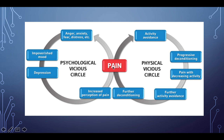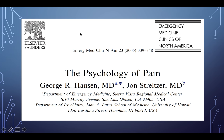These are the vicious circles of pain — both physical and psychological. On the physical side, a patient experiences pain, avoids activity, undergoes progressive deconditioning, and then experiences increased pain with any activity, leading to further avoidance. On the psychological side, pain leads to anger, anxiety, fear, or distress, producing an impoverished mood that can lead to depression, altered brain function, and increased perception of pain — continuing in a vicious circle.